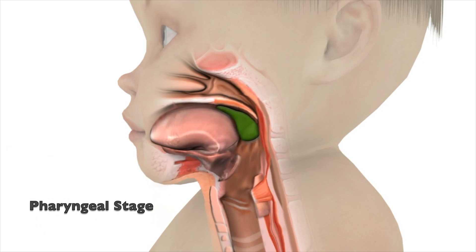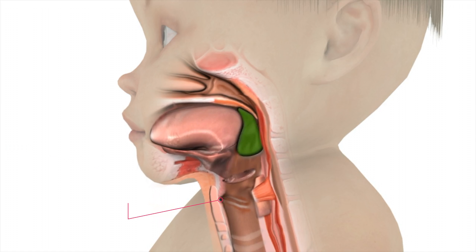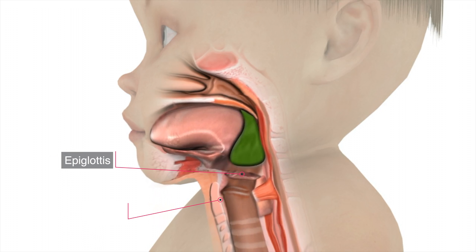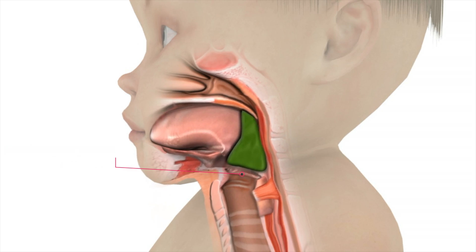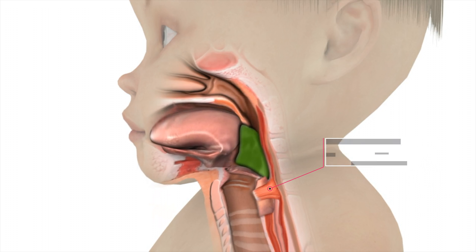The pharyngeal stage is a rapid sequential activity during which the bolus is propelled into the esophagus. The larynx elevates while the epiglottis flips down, protecting the airway. Not clearly shown are the pharyngeal muscles, which contract squeezing the bolus downward. The cricopharyngeus muscle, or upper esophageal sphincter, relaxes and opens to allow food and liquids to pass into the esophagus.